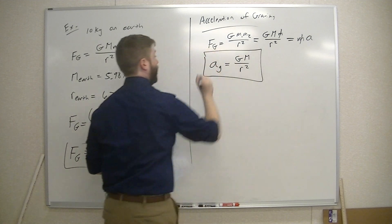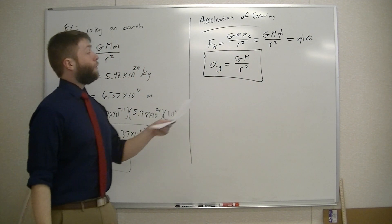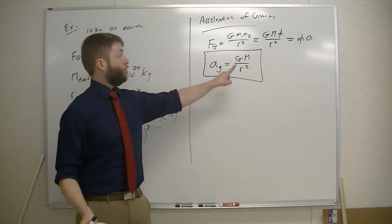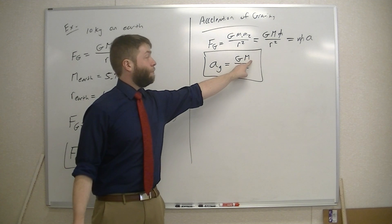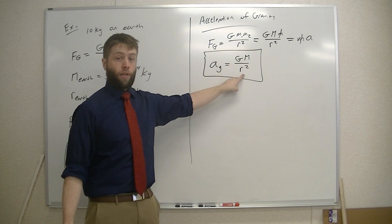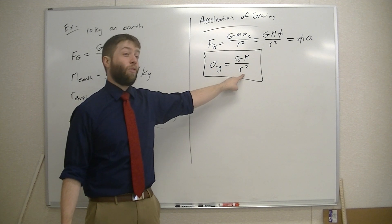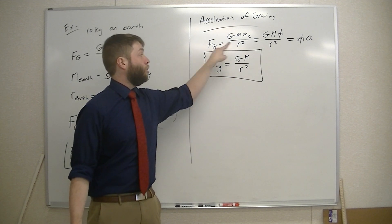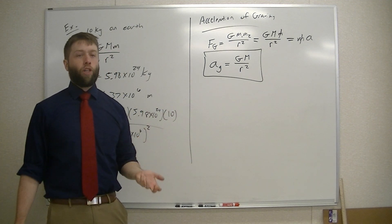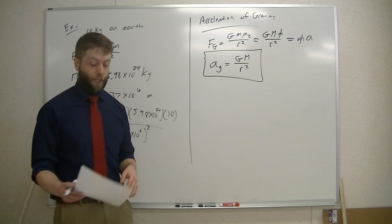This is how we calculate the acceleration of gravity due to an object. If I wanted to figure out the acceleration of gravity for the moon, big G is constant, and I would need the mass of the moon and the radius of the moon. I can use this to calculate the acceleration of gravity of Earth — we know it should be about 9.8, but let's check and make sure we get the same thing.